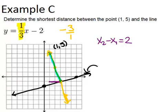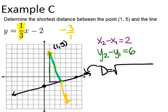And we also want to figure out the difference between the y-coordinates, which will be our horizontal change here, which is 6. So y2 minus y1 equals 6. Now I can use the distance formula and plug those numbers in.